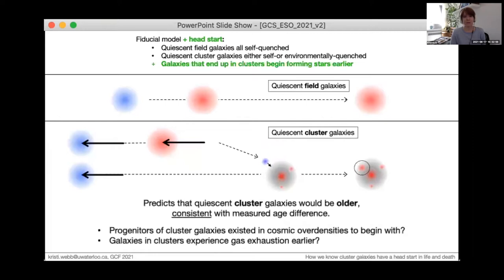And there are a few reasons why this could work. Perhaps cluster galaxies existed in cosmic over-densities to begin with and hence collapsed sometime earlier than those in lower density environments. Or if gas exhaustion is the primary quenching mechanism, galaxies in proto-clusters are simply exhausted earlier.